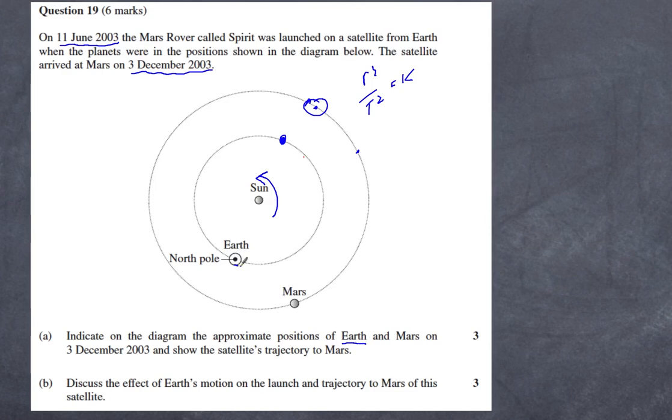It's probably going to be launched from the edge of the earth along here and then it's going to follow a path like this as it uses the gravitational field of Mars to pull it in. So a curve like this is what you're needing for the trajectory. That gives you the three marks: one mark for the position of earth, one mark for the correct position of Mars in this range over here, and the trajectory.